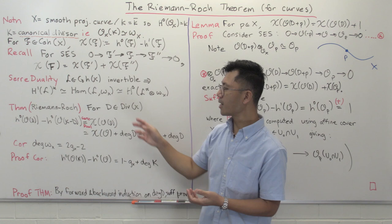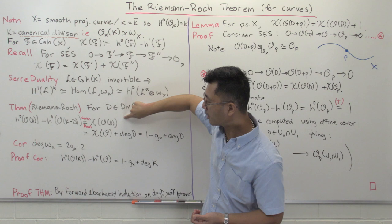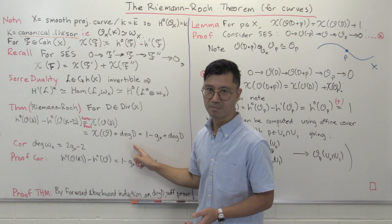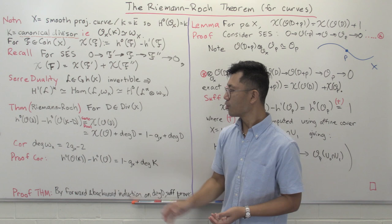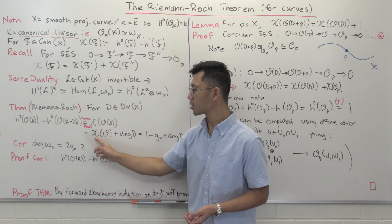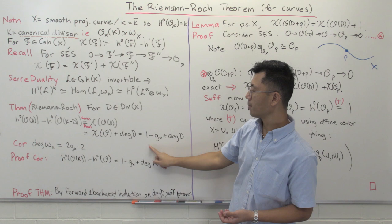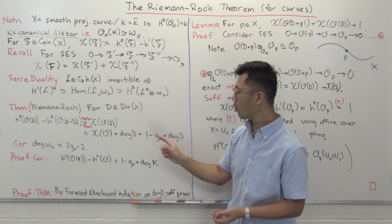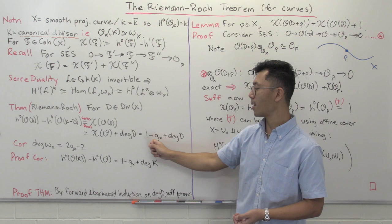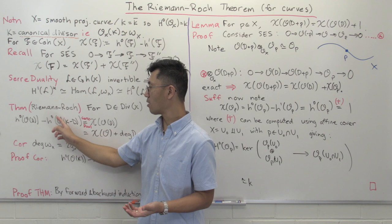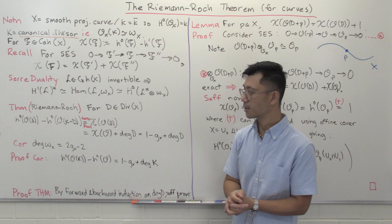The heart of the Riemann-Roch theorem is: how do you compute the Euler characteristic of an invertible sheaf like O(D)? It should be a function of D, and in fact it's a very simple function: you just take chi(O) and add the degree of D. Usually the theorem is written by expressing what chi(O) is. chi(O) = h0(O) − h1(O) = 1 − G, where G is the geometric genus defined as h1(O_X). So the usual Riemann-Roch theorem states: h0(O(D)) − h0(O(K−D)) = 1 − G + deg(D).